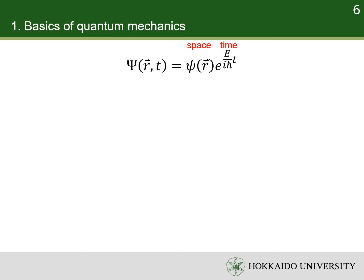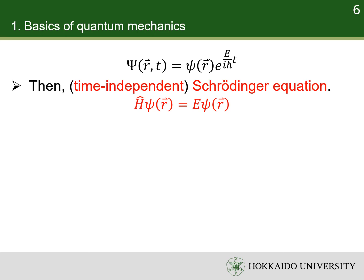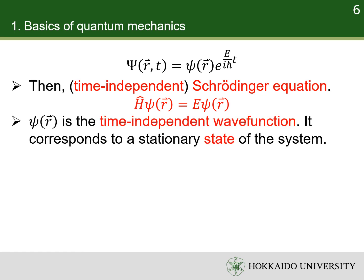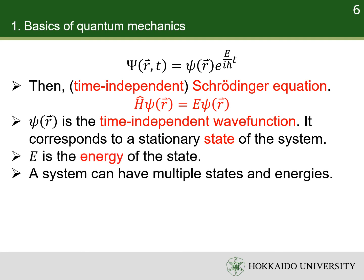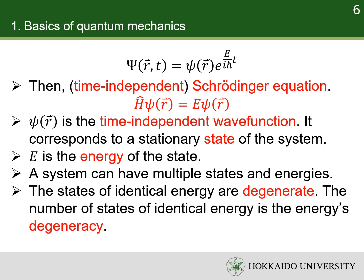We can separate the position and time in the time-dependent wave function. By doing this, we get the time-independent Schrödinger equation. This is the Schrödinger equation which we use for later discussion. The solution is called the time-independent wave function; it corresponds to a quantum state. E is the energy of the state. A physical system can have multiple states and energies, because a differential equation can have multiple solutions. The states with identical energy are degenerate, and the number of states with identical energy is the energy's degeneracy.